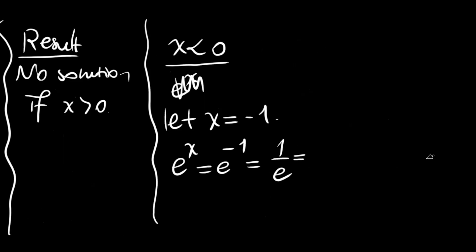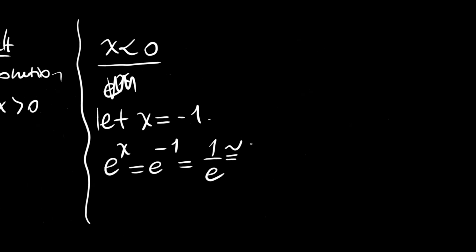Considering e is 2.7, this is 1 divided by 2.7 actually. 1 divided by 3 is 0.3, maybe this is 0.3 something else.